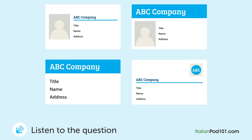A man and woman are discussing the company business card design. [Question: Which design did they choose?] "We have some new designs for the company business card. Which do you think is best?" "I think the company name should be bigger." "Then it should be one of these." "Right. I like these because the company name is large at the top. One of these has space for a photo. What do you think?" "I think it makes the text too small — it could be difficult to read with the photo." "Ok, then let's go with the other."